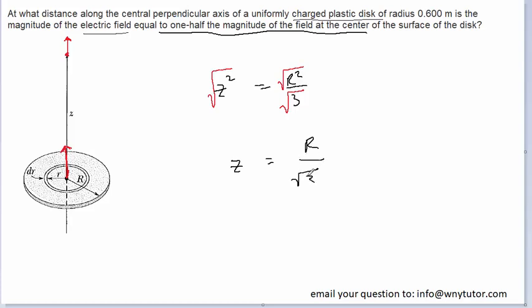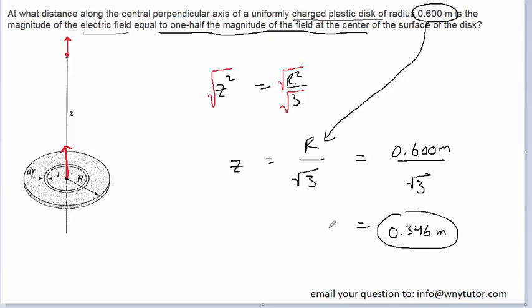And so at this point, all we have to do is plug in the value of the radius, and that was given, in this case, as 0.6 meters. So we'll just have 0.6 meters divided by the square root of three. And we are left with approximately 0.346 meters as our value of z. So that would represent the distance above the charged disk at which the electric field here is going to be half the magnitude of the electric field at the center of the disk.